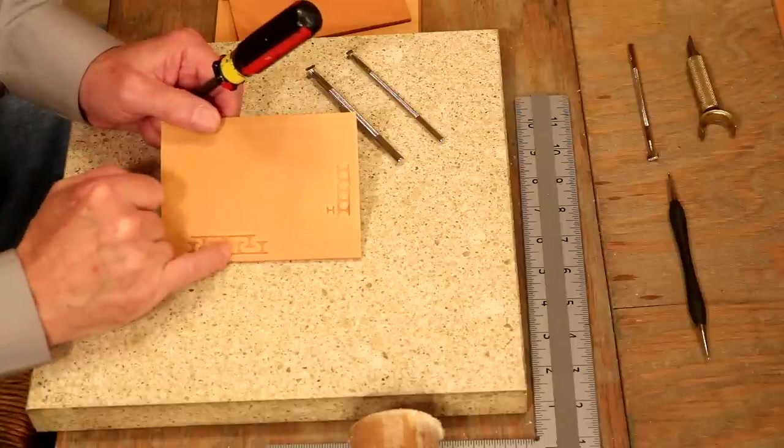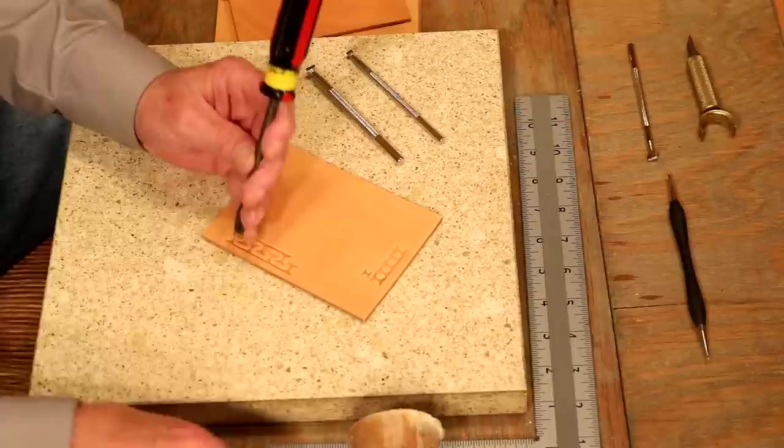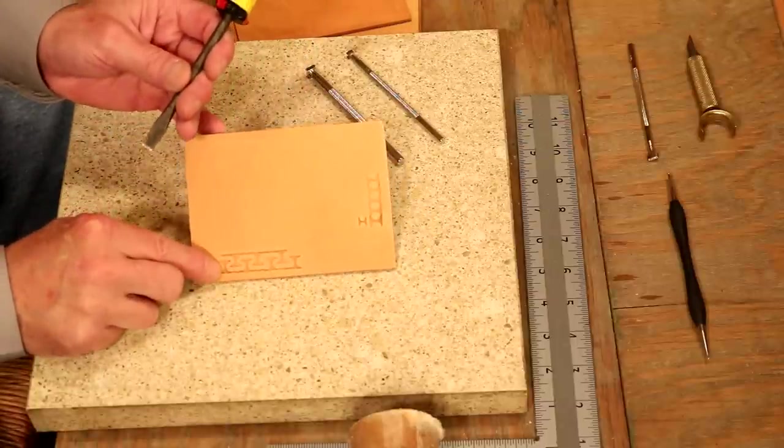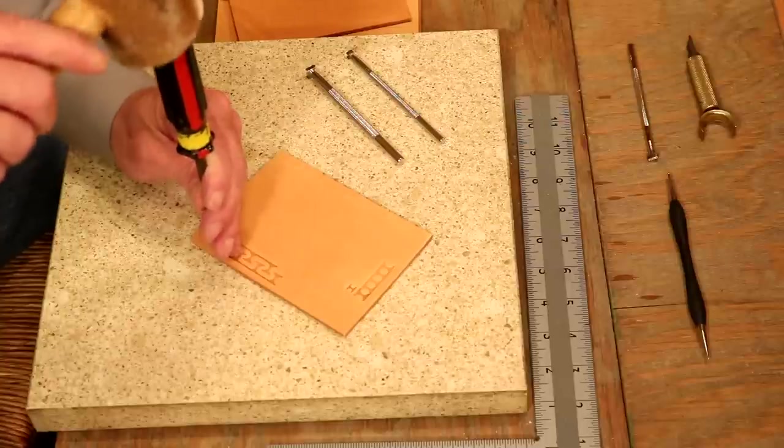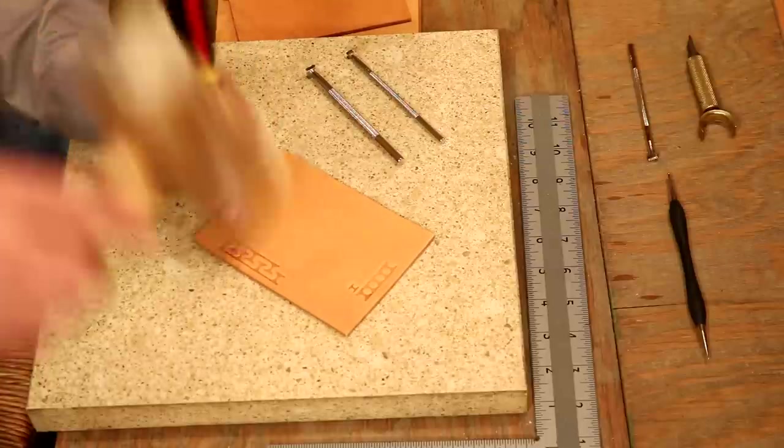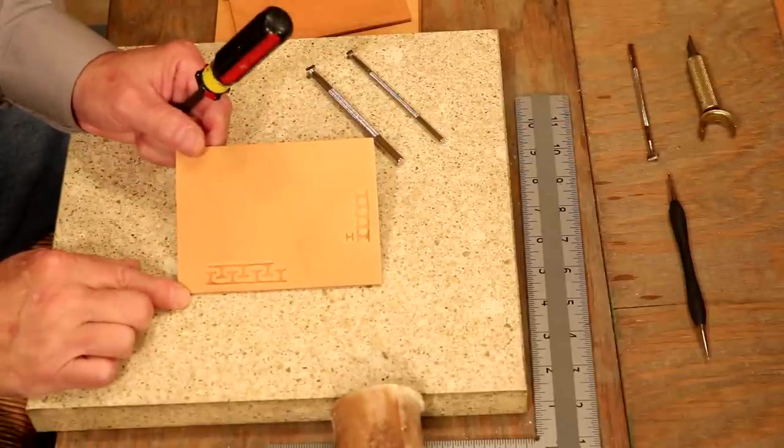But now we can see that serpentine line. But a cool thing with this tool, like right here, I've got a little bit of heavier stamp. Let's drop this in, and we can smooth that out. Yeah, there we go. Looks pretty good.